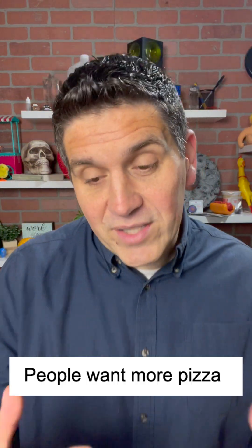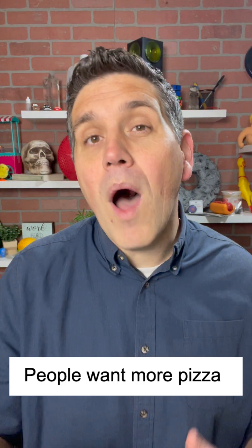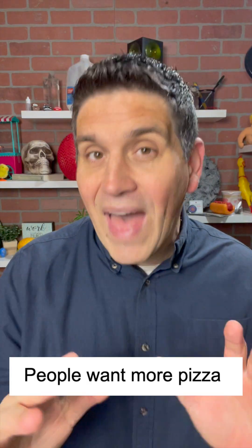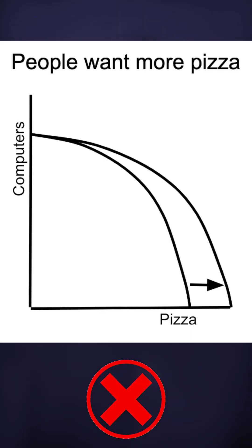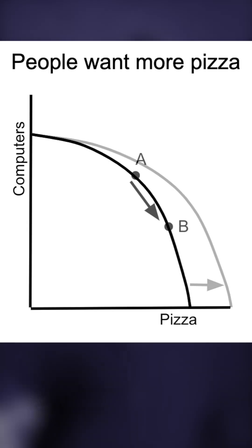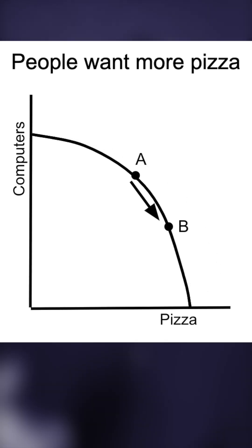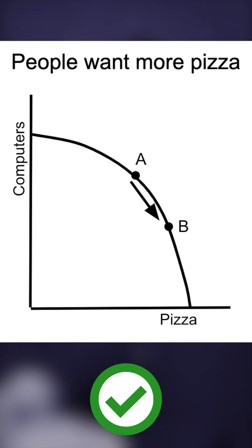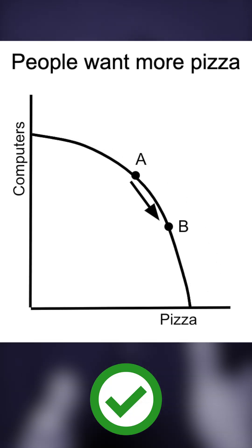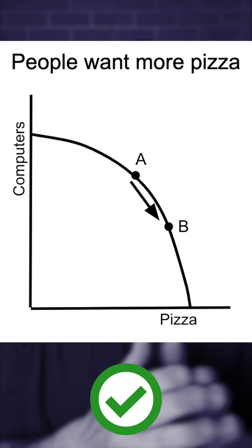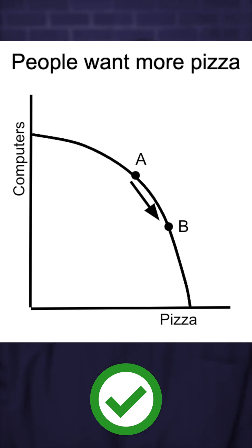Number two is a change in demand. For example, if people want more pizzas, that's going to affect the production possibilities curve, but it's not a shift in the production possibilities curve. Instead, it's a change of the point on the curve. We're changing the allocation of resources away from computers and towards pizza.